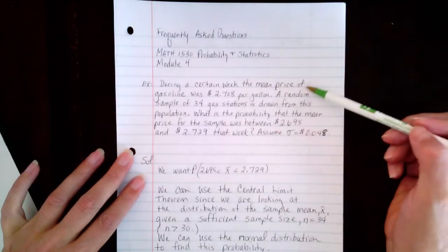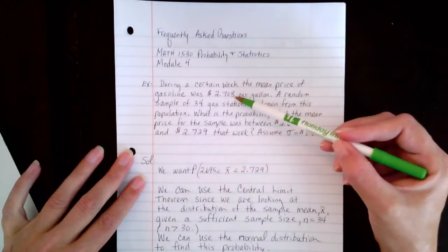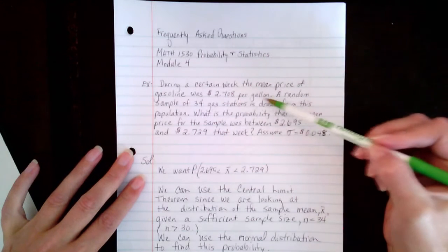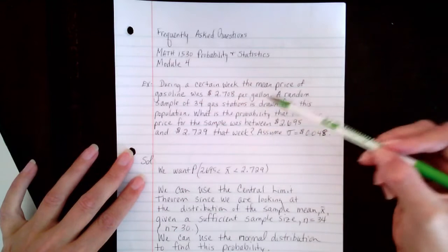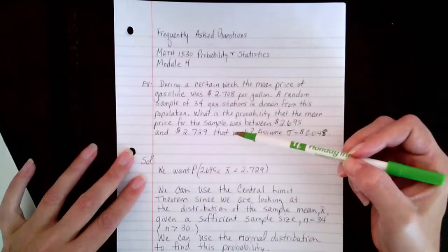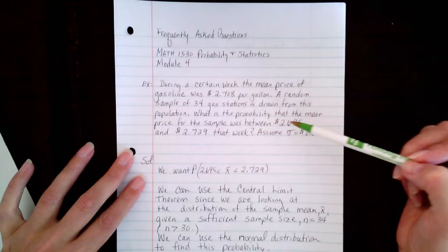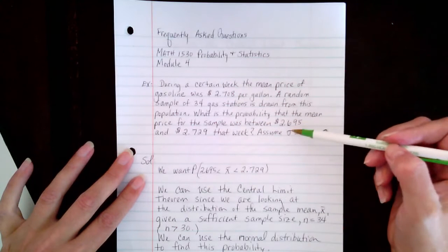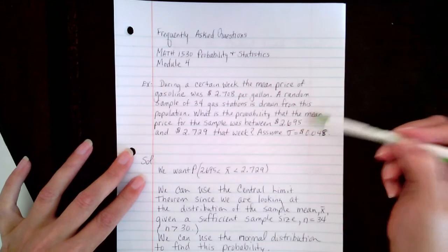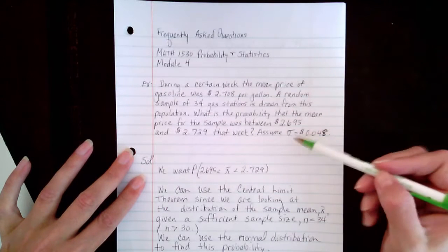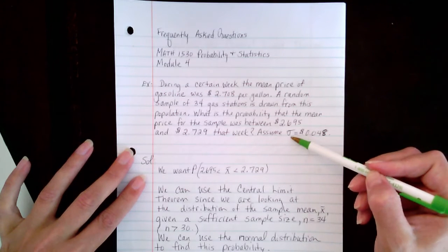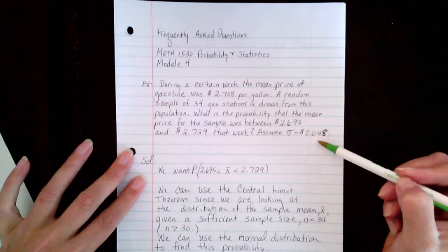During a certain week, the mean price of gasoline was $2.708 per gallon. A random sample of 34 gas stations is drawn from this population. What is the probability that the mean price for the sample was between $2.695 and $2.729 that week? Assume that the population standard deviation is 0.048.